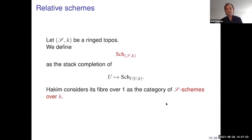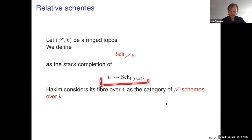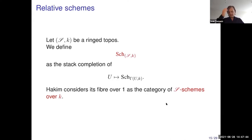Moving to more general schemes obtained by gluing affine pieces: for a base ringed topos (S, K), we define schemes over (S, K) as the stack completion of the fibration given by the rule that, to an object U of S, assigns the category of schemes over K(U). Hakim then considers the fiber of this stack completion as the category of S-schemes over K.